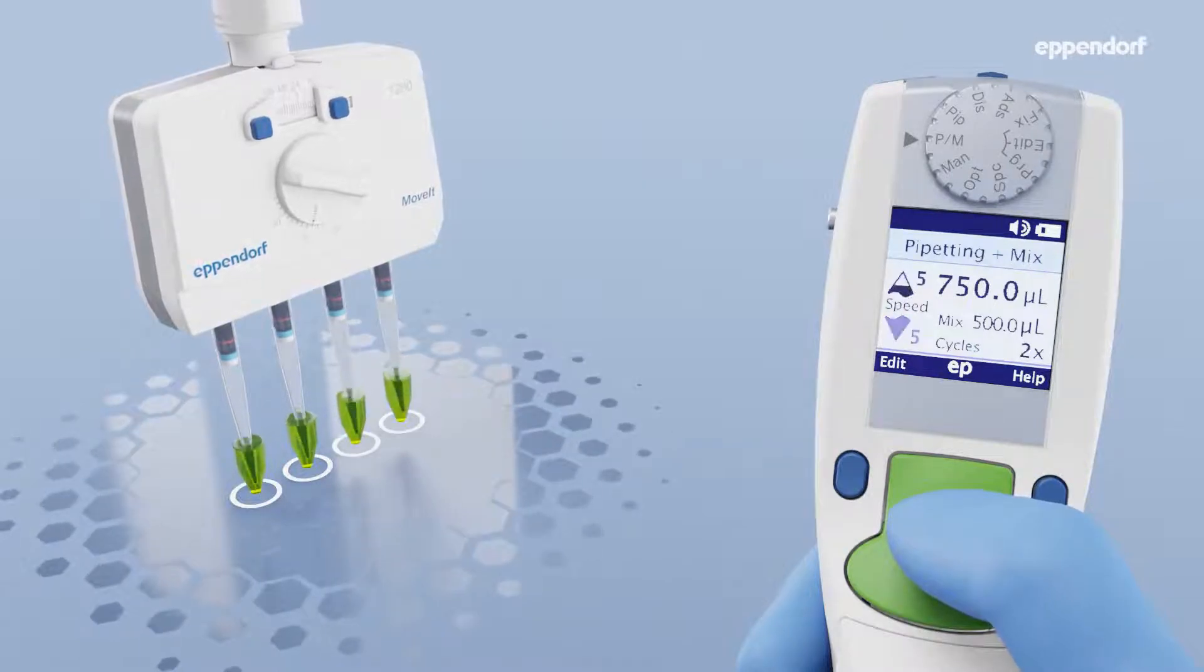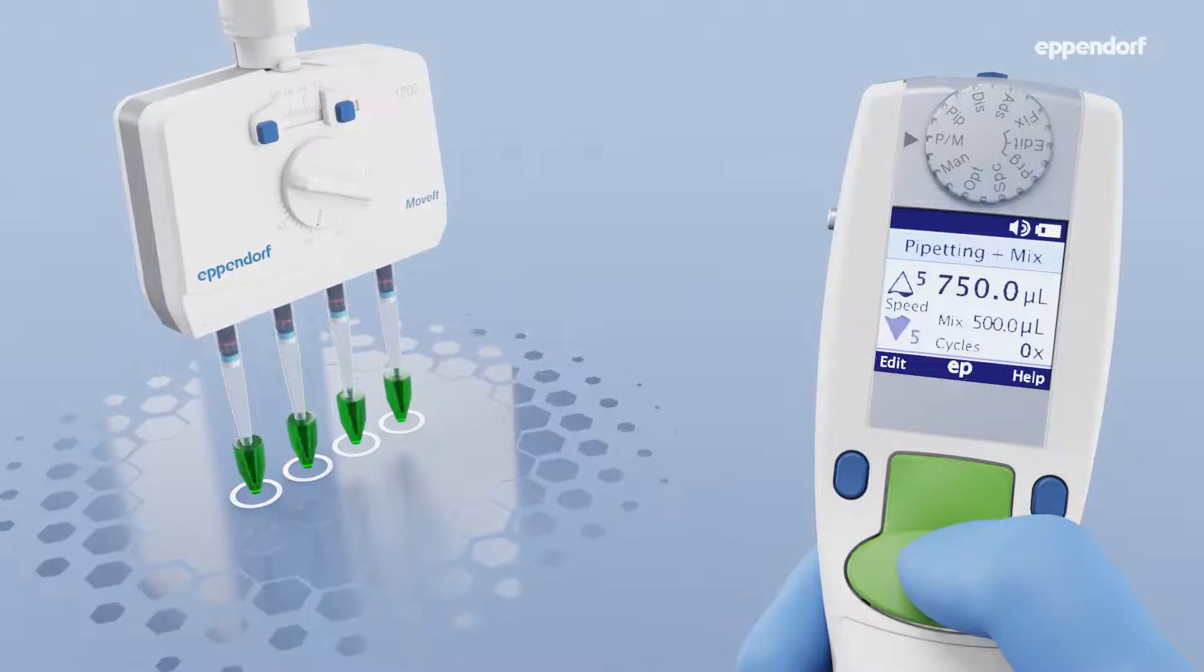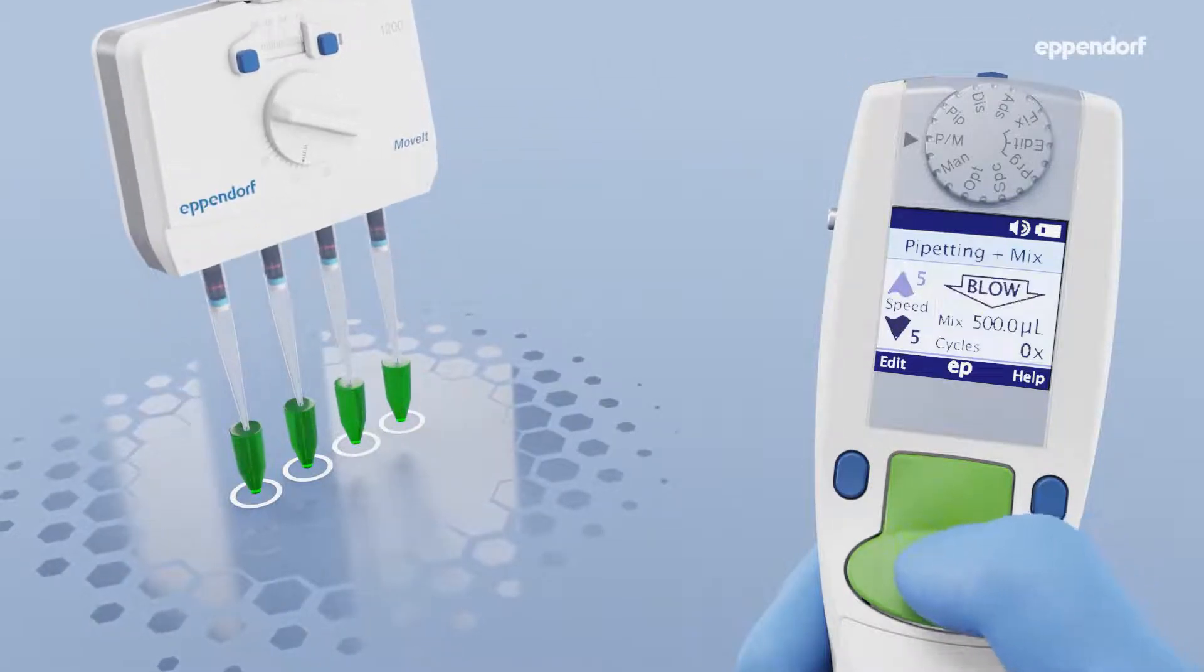Holding the rocker down during mixing will continue the process beyond the number of set mixing cycles. Pressing the rocker down again after the mixing process will perform a blowout.